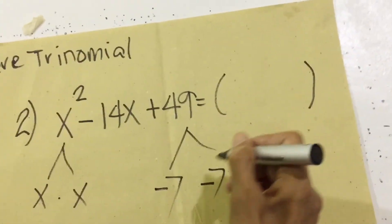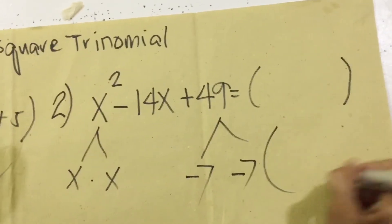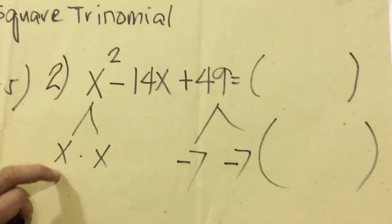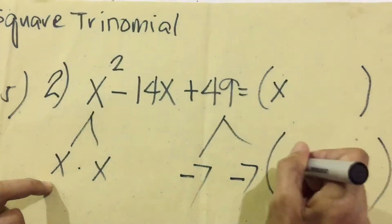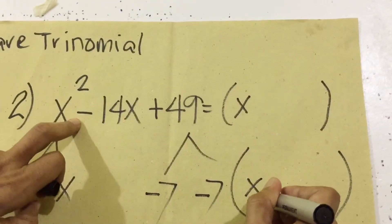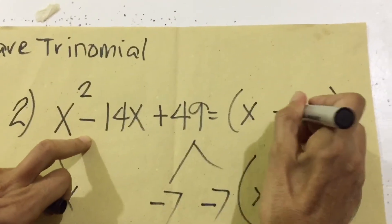The same, we are going to use two parentheses. We will write one factor here and the other is here. Since the middle term is negative, we will use negative and negative.